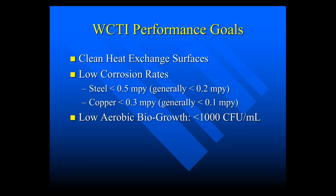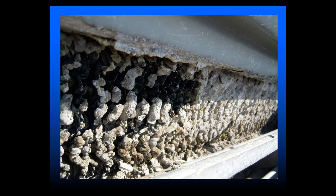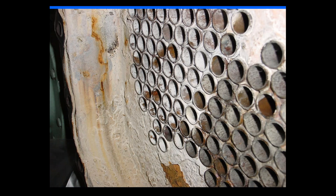Why soft water makeup? Soft water eliminates the hardness scale, which reduces efficiency. Scale can build up on tubes by fractions of inches or even inches, and that will decrease your efficiency and decrease heat transfer. If you've got makeup water coming in with high hardness and alkalinity, you will have deposits. This is one of the most severe cases I've seen — this is the fill for the tower that the water goes through, and obviously not much water flow is happening there. And here is the scale that's on the tubes; scale is a great insulator, so again you have poor heat transfer.